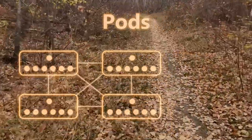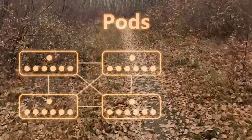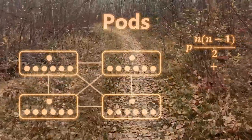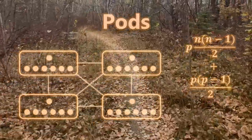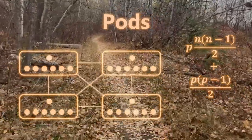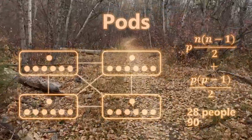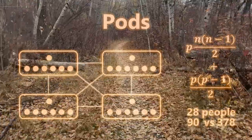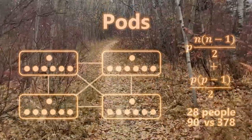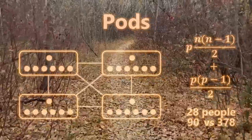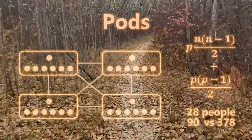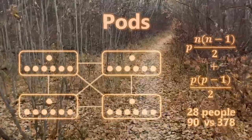Using a flat structure within those pods, each pod has 21 connections. The formula for the entire team is P times (n times (n minus 1) over 2) — the within-pod communication — plus P times (P minus 1) over 2 for pod-to-pod communication. For four seven-person pods, that gives us 90 communication channels, versus a fully flat 28-person team which would have 378 channels. We've reduced the number of channels by a factor of 4 by grouping people together who need to communicate.